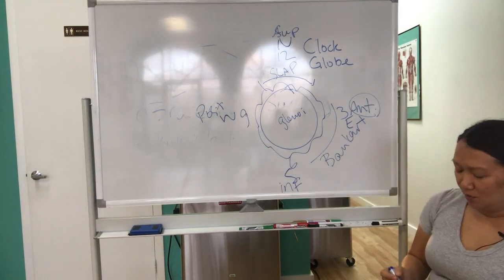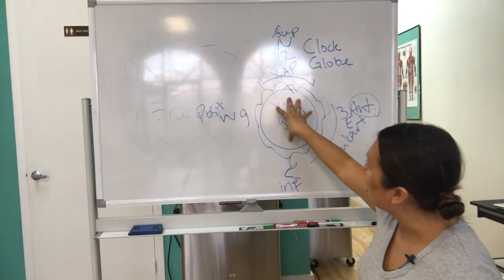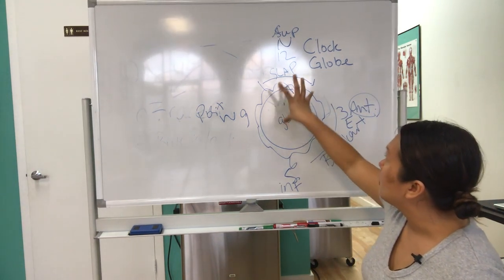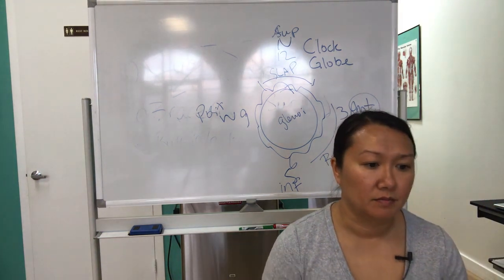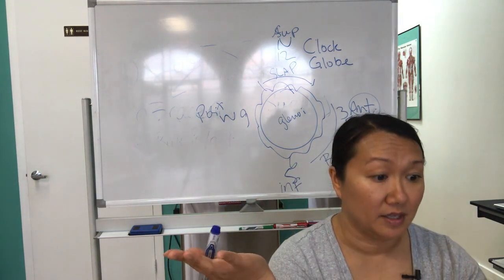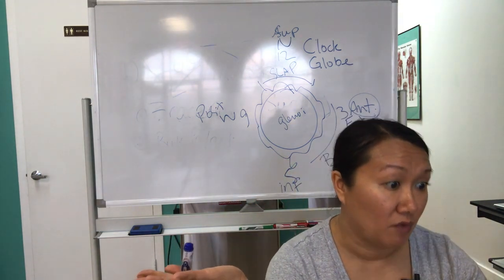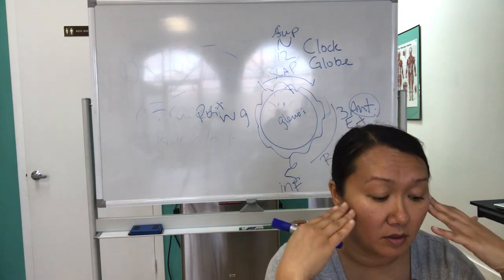So when you look at it, it's kind of like it's still all the same thing. They're just talking about the glenoid as being round and the different positions. In that sense, it's easy to remember because they're all round and everything is about positions.